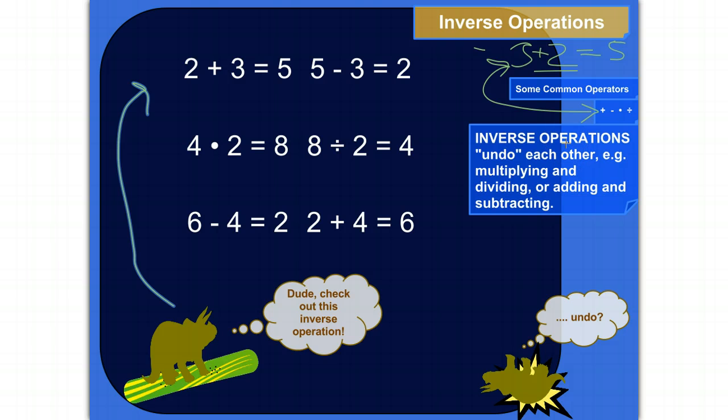So for example, multiplying and dividing. If you multiply something, if you want to get back to what you originally started with, then you divide. So for example, say like, here's my operator, my addition operator. Say like I added 3 to 2. I would get 5. 2 plus 3 is 5.